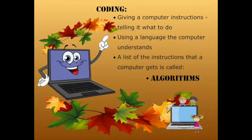Did you ever wonder how your computer got so smart? Well, it's only as smart as the people who give it instructions and tell it what to do. That is called coding. Coding is giving a computer instructions in a language that it understands. A set of instructions that a computer gets is called algorithms.